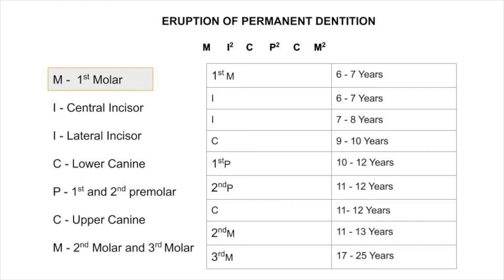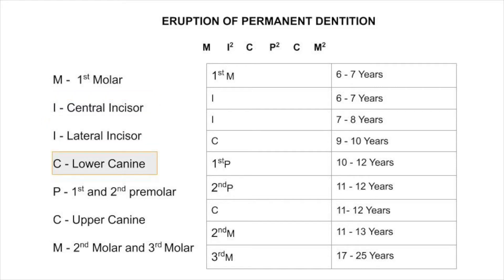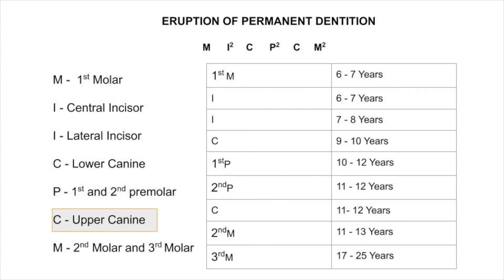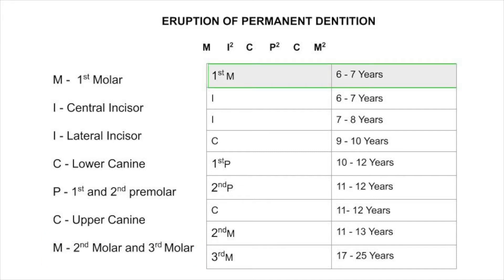In this sequence: M stands for first molar, the first I stands for central incisor, the second I stands for lateral incisor, C stands for lower canine, P stands for first and second premolar, the second C stands for upper canine, and M stands for second molar.